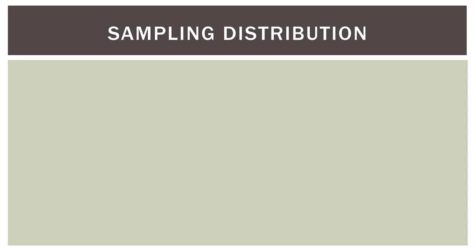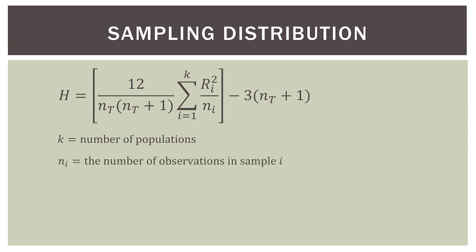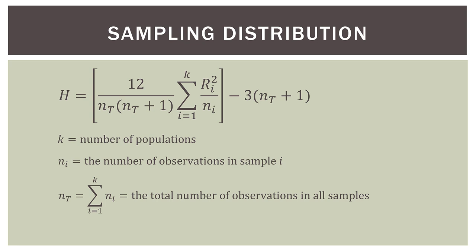So what is the sampling statistic for the Kruskal-Wallis test? It is denoted by the letter H. The formula looks pretty complex, but I'll walk you step-by-step through it in Excel. K is just the number of populations, which is 3. n sub i is the number of observations in each sample, in this case 15. The summation gives the total number of observations in all samples, which is 45. And r sub i is the sum of the ranks for each sample.